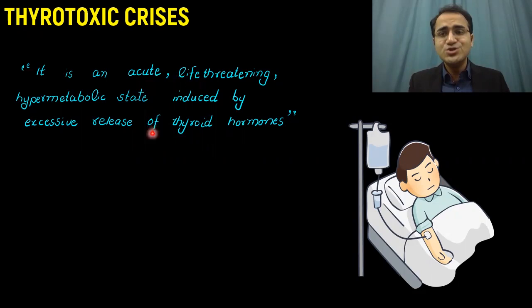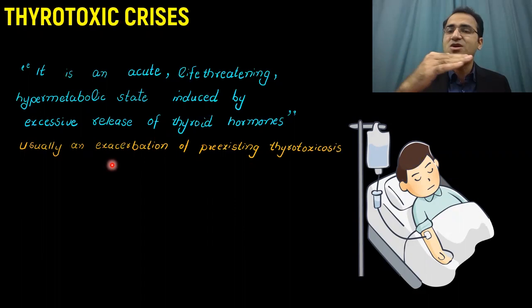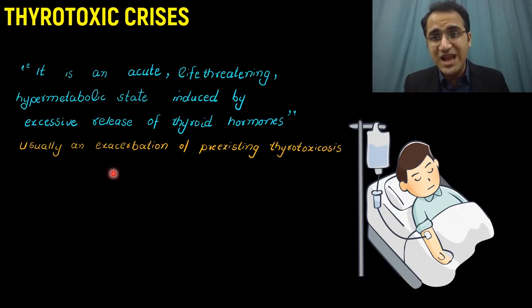Usually it happens in patients who are already having a pre-existing thyrotoxic state. Those patients are already in a compensated thyrotoxic state, but all of a sudden they develop sudden thyrotoxicosis — sudden release of thyroid hormones resulting in thyrotoxic crisis. And that acute condition is life-threatening.